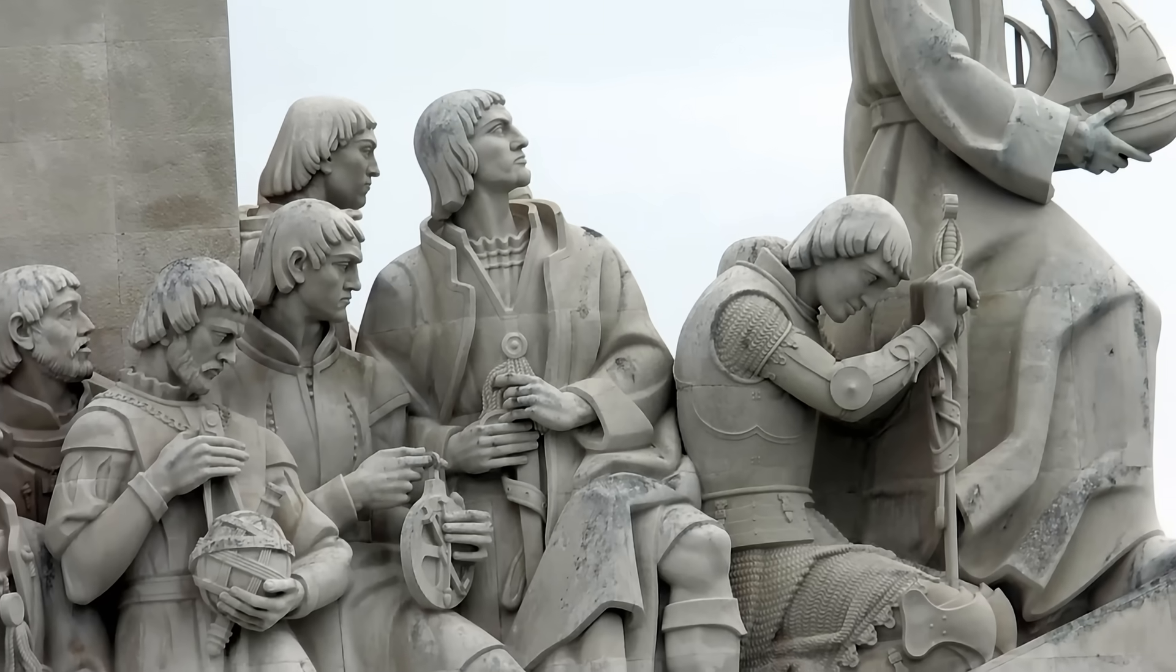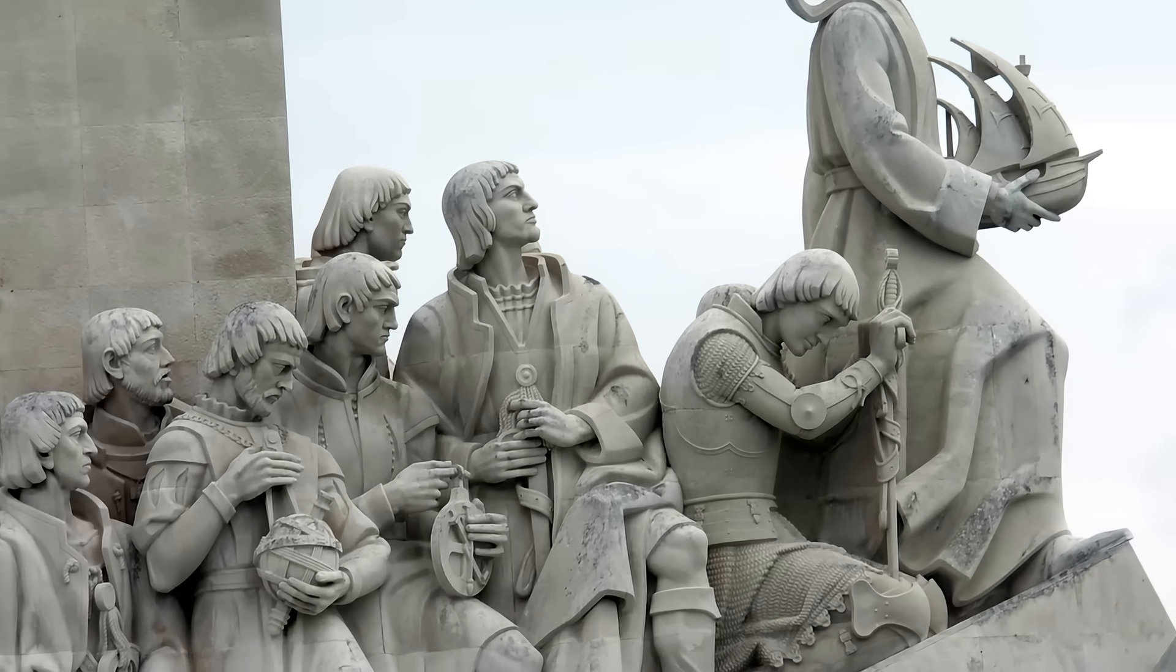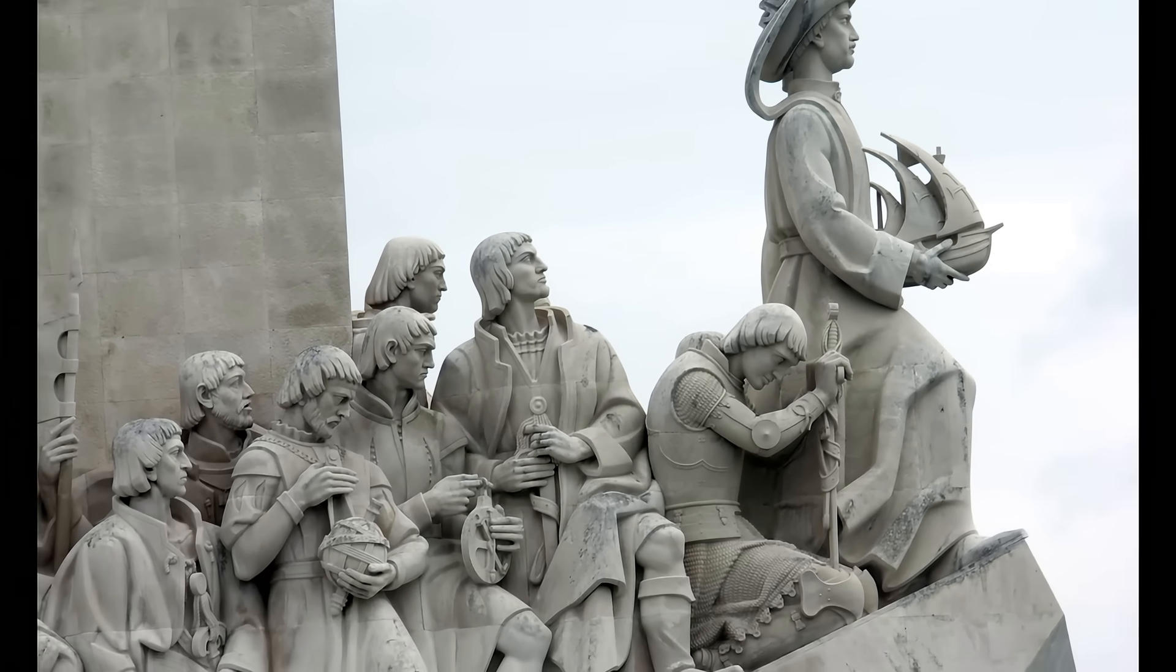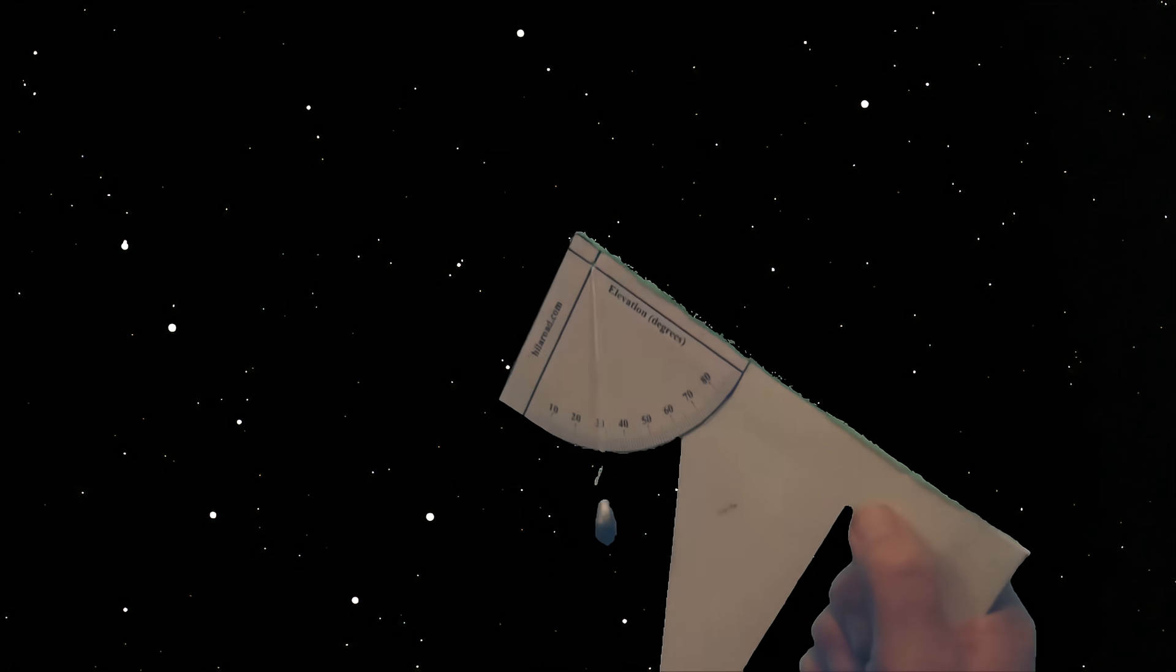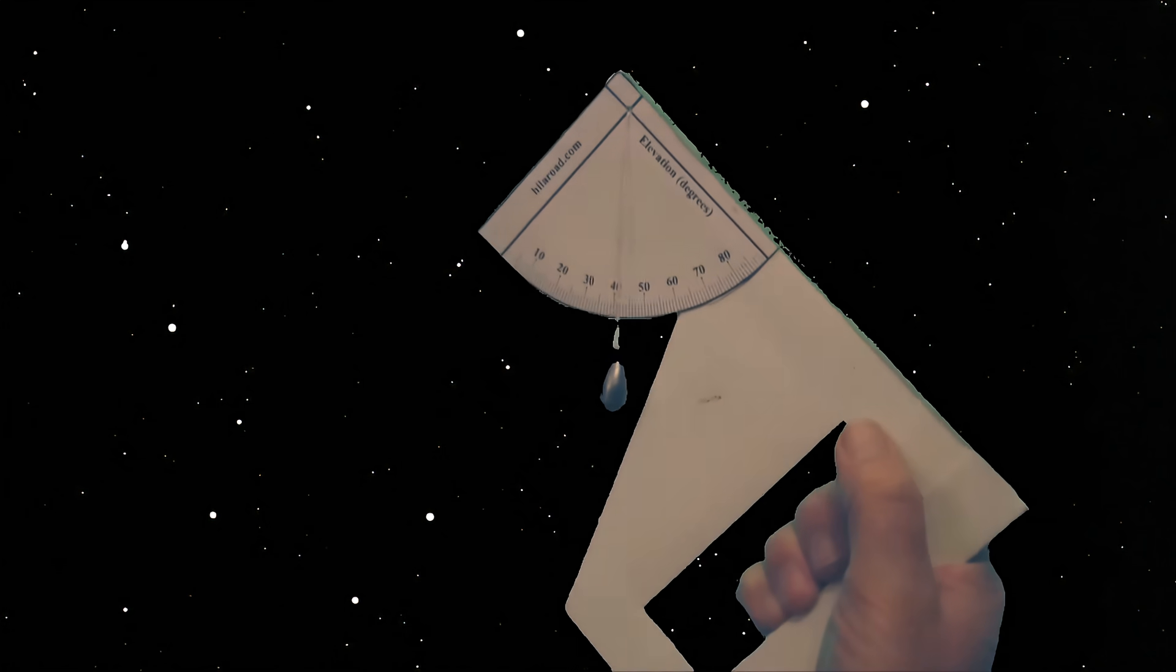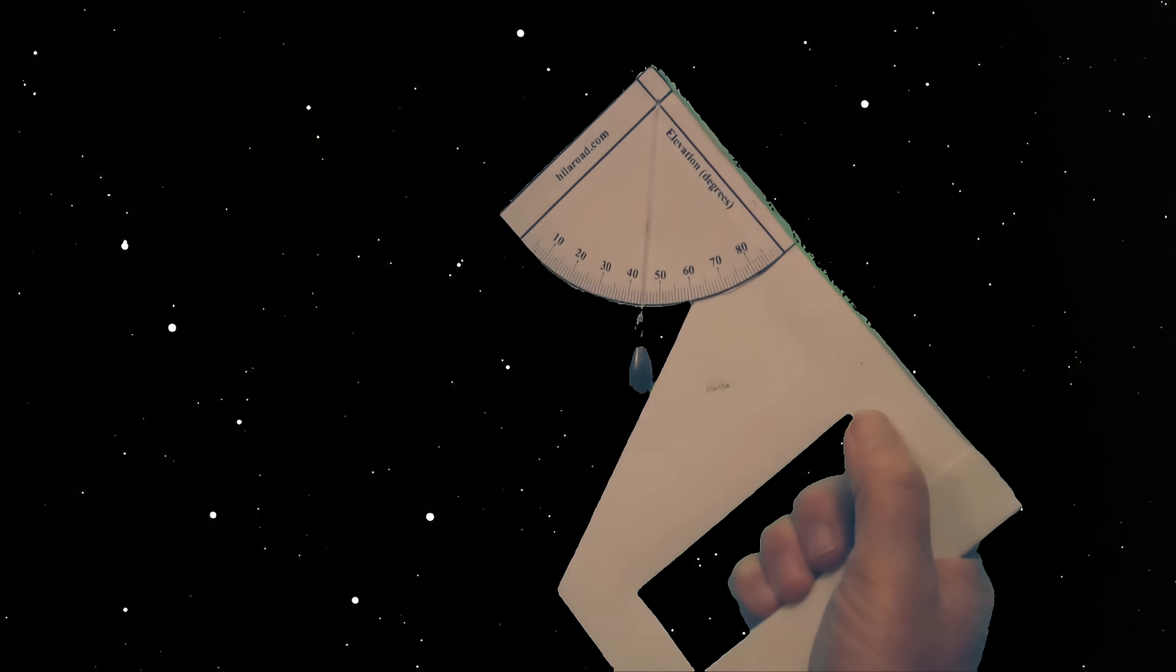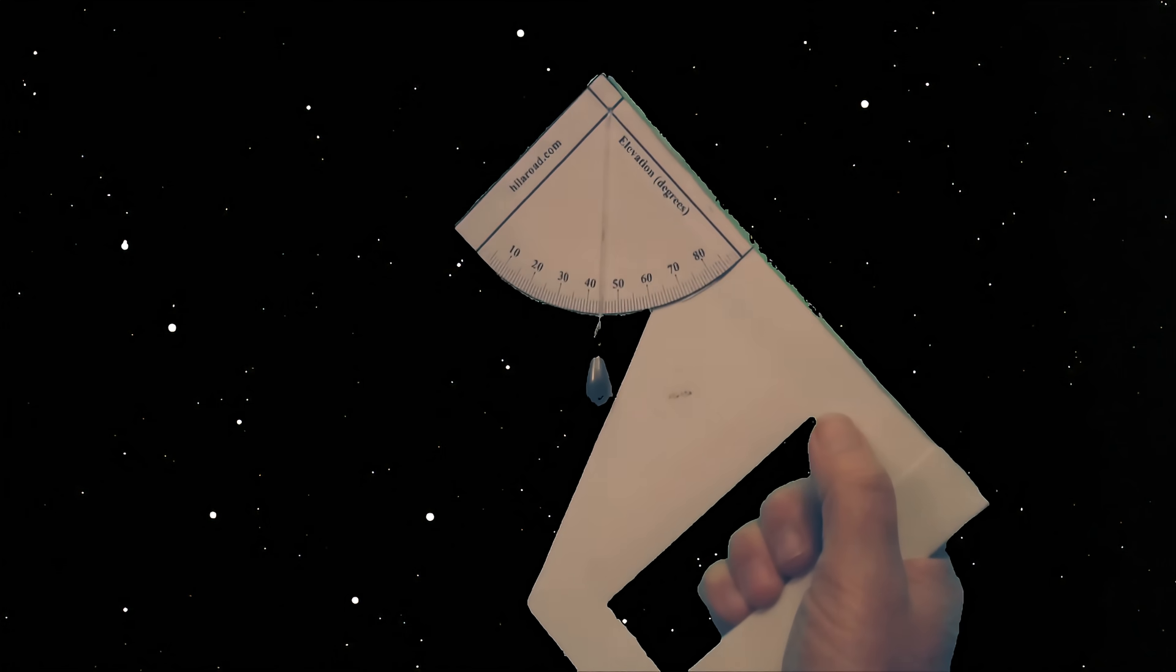The first Portuguese explorers, with an eye on Polaris, crossed the Atlantic following lines of latitude. You can easily create a device to measure this angle. View our inclinometer video for instructions on measuring the angle to Polaris. Using an inclinometer at my location reveals an angle to Polaris of 45 degrees. My latitude is 45 degrees north.